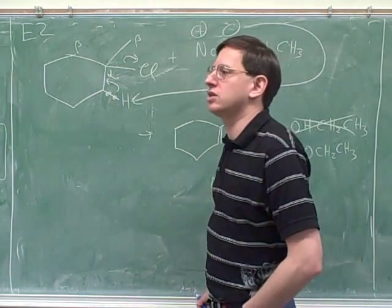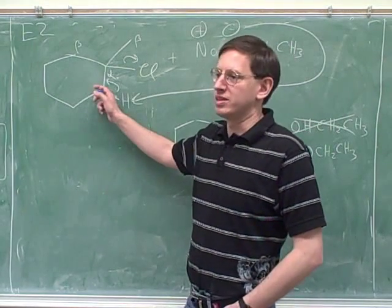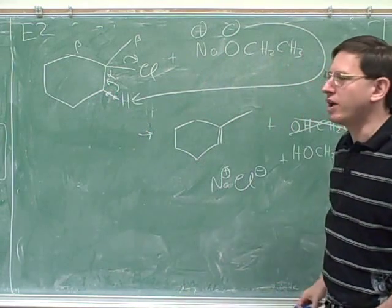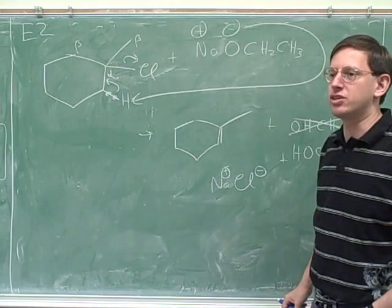The hard part again: anytime you're doing an elimination, you have to identify all the beta carbons and then decide which beta carbon is going to be attacked. Well, if it's an E2 reaction, by the way, all this Hoffman and Zaitsev was just for E2.